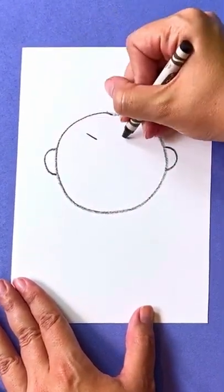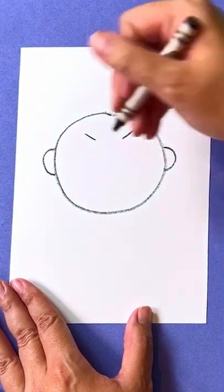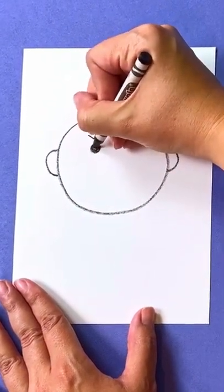Next, two little diagonal lines for his mischievous eyebrows. And two big dots for his eyes.